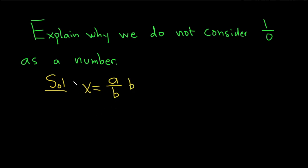I'll put a b here and a b here, and you get bx equals a. So if we define a number as a over b, then it must satisfy this equation.